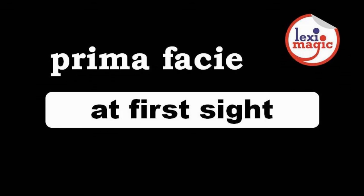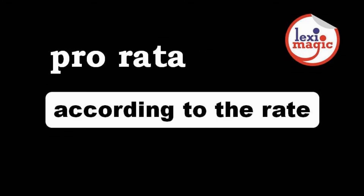Prima facie translates to 'at first sight.' For example, the task seemed easy prima facie, until we went into the finer details. Pro rata translates to 'according to the rate' and means proportionately. For example, each worker will be paid his weekly wages on a pro rata basis, that is, for the number of hours he worked in a week.